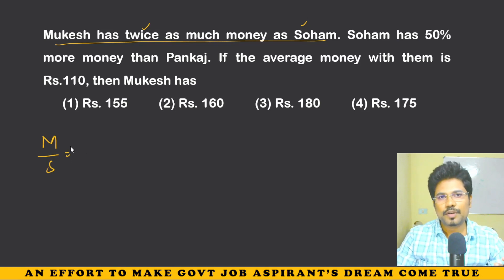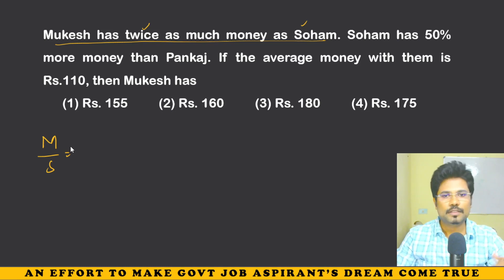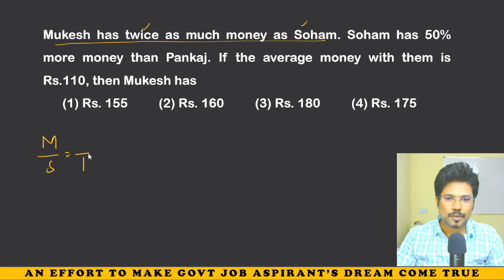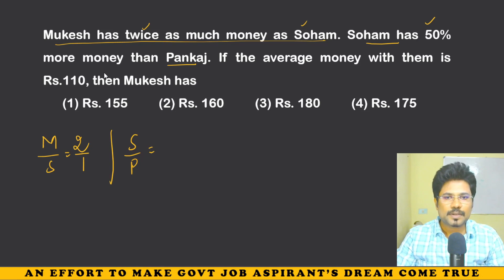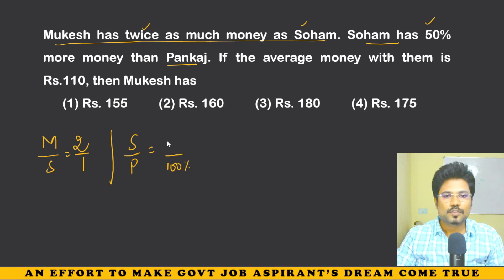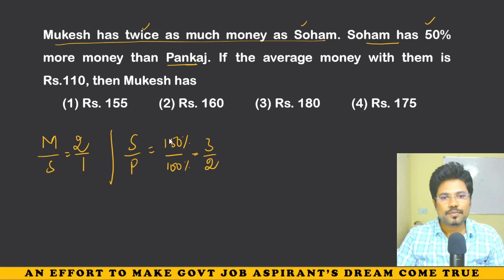We are moving forward with ratio and proportion. Mukesh has twice as much money as Soham — so if Soham has 1 rupee, Mukesh has twice that. Soham has 50% more money than Pankaj, so Soham to Pankaj ratio is 3 to 2.